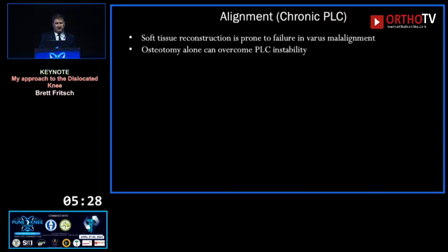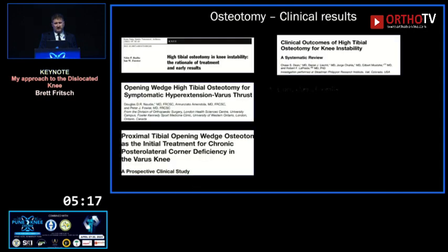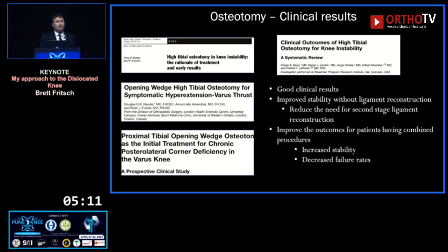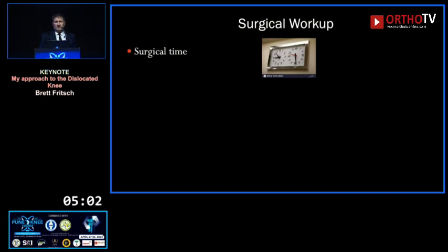In the chronic case, don't forget alignment — soft tissue reconstructions are prone to failure in varus malalignment, and osteotomy alone can show really good outcomes. If there is a chronic posterolateral corner injury, the literature shows good clinical results: it improved stability in those without any ligament reconstruction, improved outcomes combined with reconstruction, and if you've got varus malalignment with a thrust, you will not win with a soft tissue procedure alone.